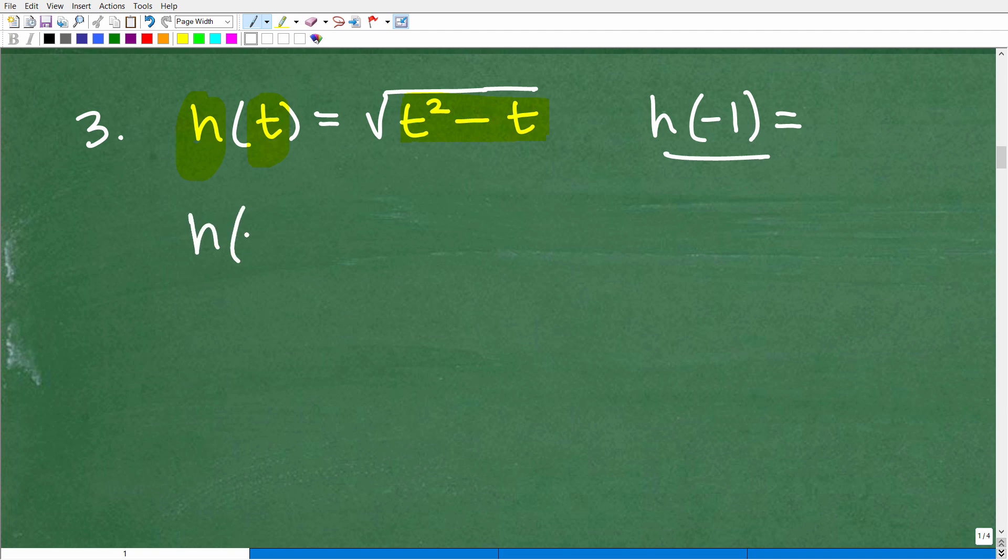Let's go ahead and evaluate this h function for negative 1. We want to find h of negative 1. Let's go ahead and do that now. So we're going to have to be very careful here. Remember, I said use parentheses. So we're going to replace the t with negative 1. So that's going to be negative 1 squared, that's t squared, minus parentheses negative 1 for that t.